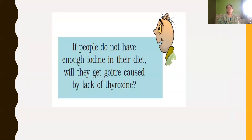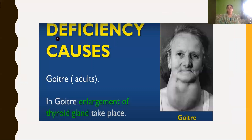Iodine also plays an important role in human beings. If people do not have enough iodine in their diet, they get goiter, caused by the lack of thyroxin. Iodine is very important for the production of thyroxin, which is produced by the thyroid gland. That is why nowadays we get iodized salt — presence of iodine is very essential. Deficiency of iodine causes goiter, which is swelling of the neck region due to enlargement of the thyroid gland.